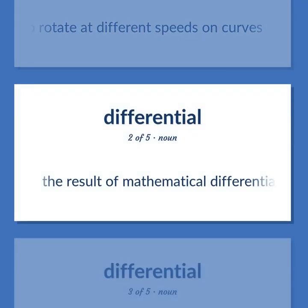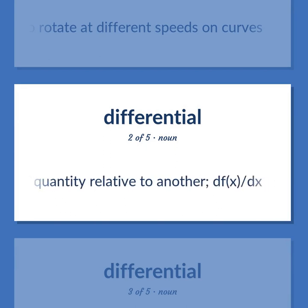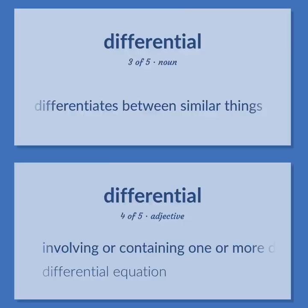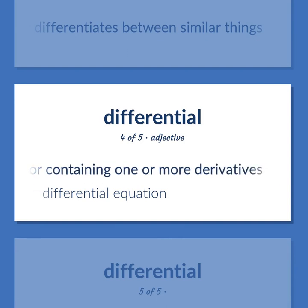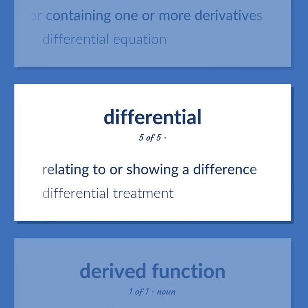Differential — the result of mathematical differentiation; the instantaneous change of one quantity relative to another: Df(x)/dx. A quality that differentiates between similar things. Involving or containing one or more derivatives. Example: Differential equation. Relating to or showing a difference. Example: Differential treatment.